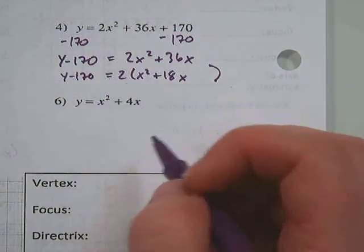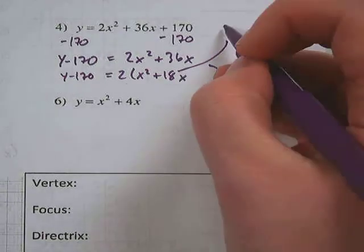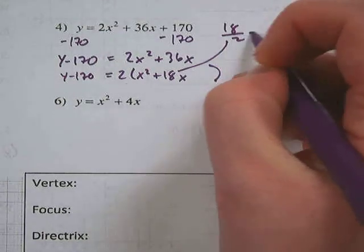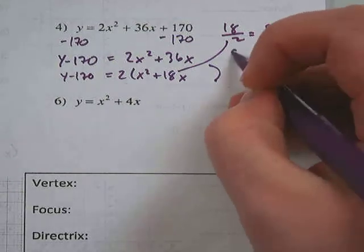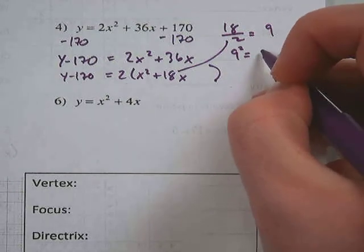All right, so we factored out our 2. So we take this middle term here, 18, and we divide it by 2 to get 9. And then we have to square it to get 81.